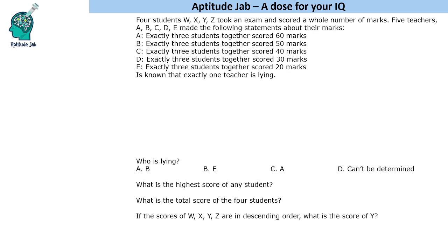Five teachers A, B, C, D, E made the following statements about their marks. A said exactly three students together scored 60 marks, B said 50 marks, C said 40, D said 30, and E said 20. It is given that exactly one teacher is lying.